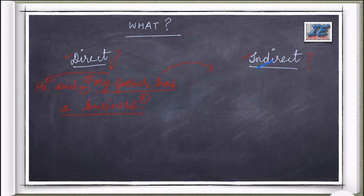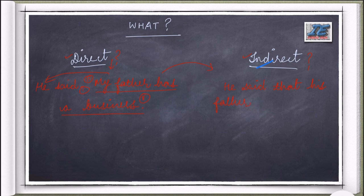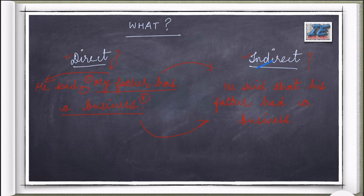Now if I pass the same information another way — like 'He said that his father had a business' — I have given the substance of the speaker's actual words, not the exact words. The meaning of both sentences is the same, but here I have not quoted the exact words. This is called indirect speech.